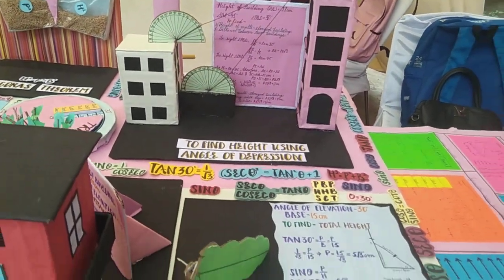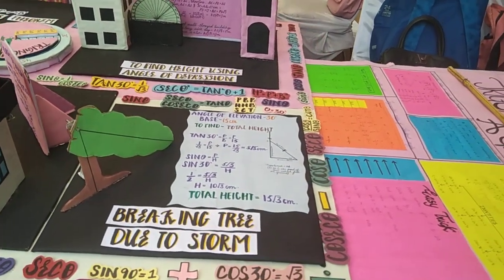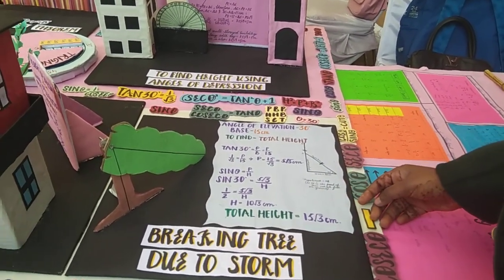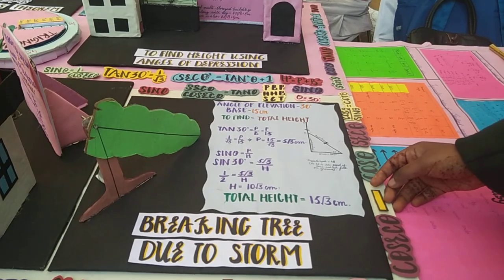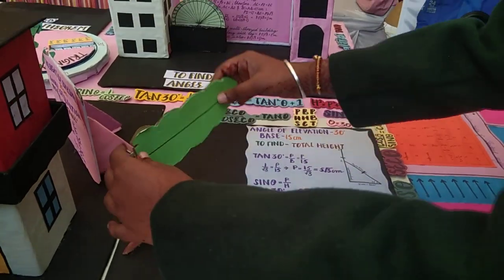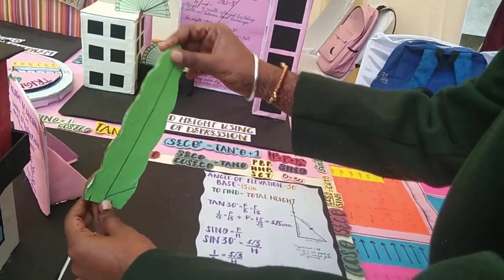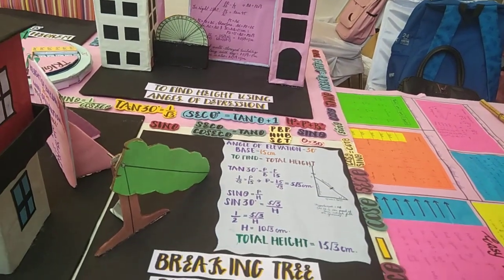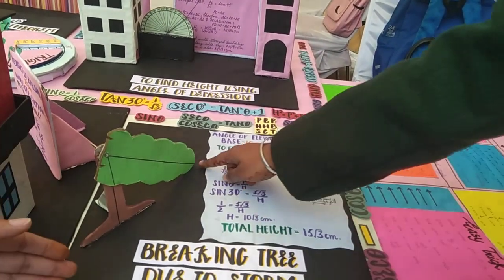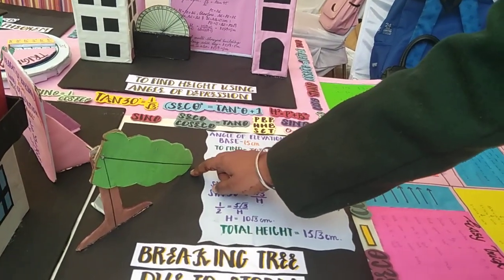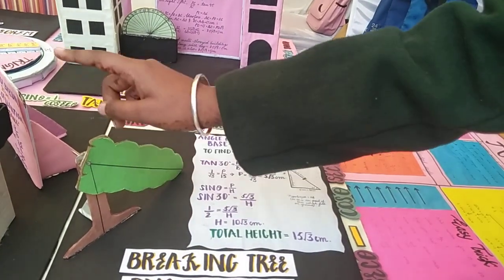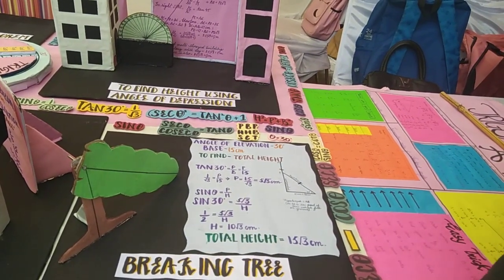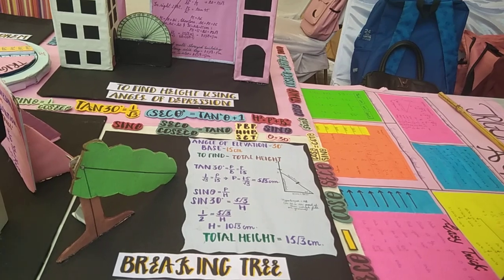Moving on to an interesting example of trigonometry — a breaking tree due to a storm. Suppose a tree was standing erect and had fallen down due to a natural calamity such as a storm, and it touches the ground at a certain angle. We have to find the total height of the tree. Trigonometry has made this concept very easy.